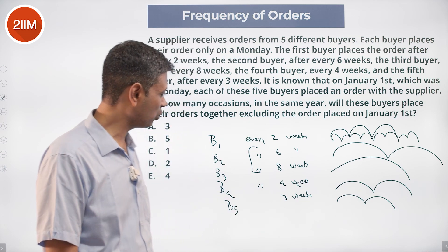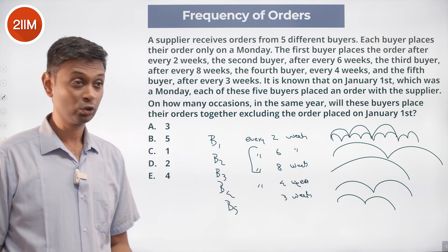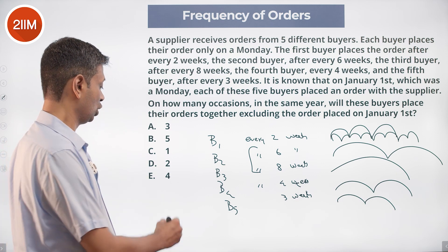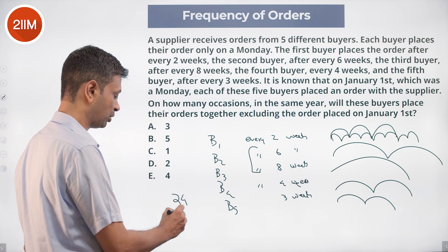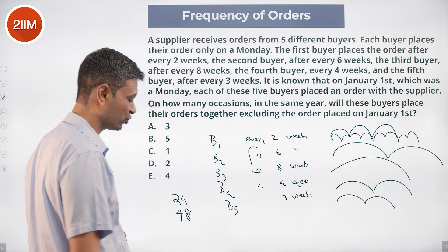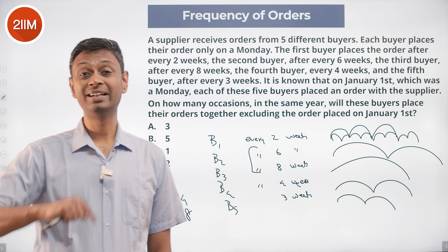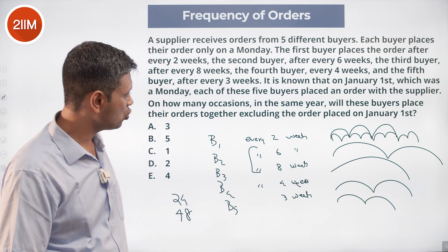And so every 24 weeks. This happened on Jan 1, it happens 24 weeks after that, it will happen 48 weeks after that, it will happen 72 weeks after that, which will become the next year.